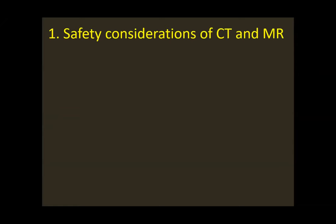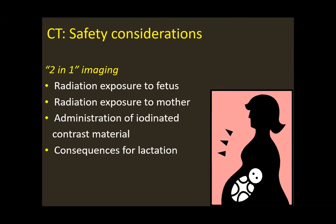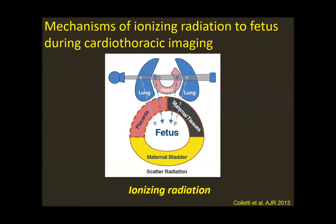Let's start with safety considerations in CT. The unique nature of imaging in pregnancy is that we are imaging two-in-one — mother and fetus simultaneously. We are talking about radiation exposure to the fetus, but we should not forget the radiation exposure to the mother, and also contrast administration and consequences for lactation in the postpartum period. When thinking about mechanisms of ionizing radiation during cardiothoracic CT, we are talking about scattered radiation — there is no direct radiation to the fetus since we are imaging the chest, not the abdomen. The radiation the fetus receives is only scattered, with substantial attenuation through the mother's soft tissues.